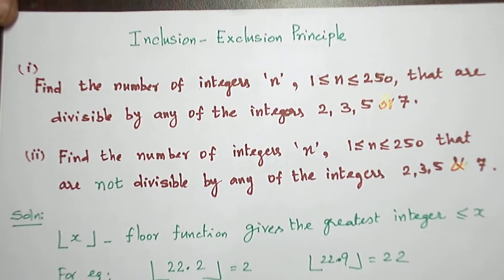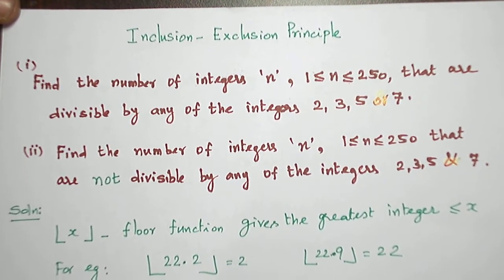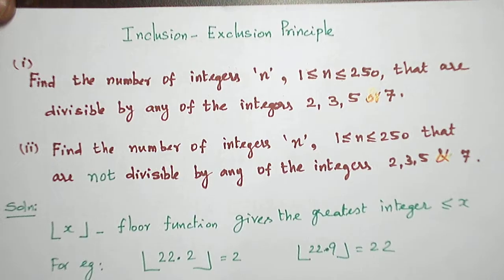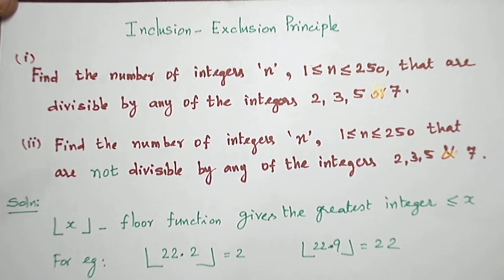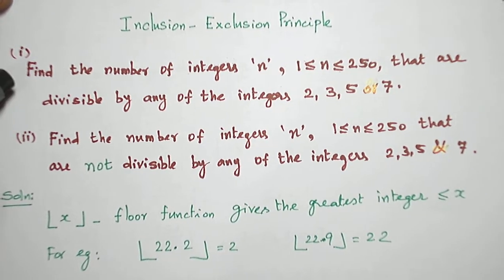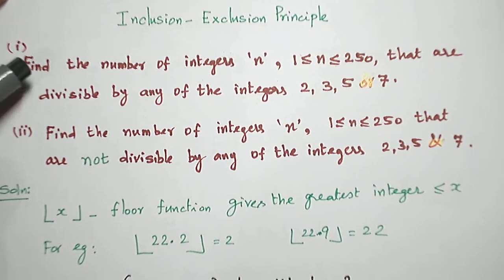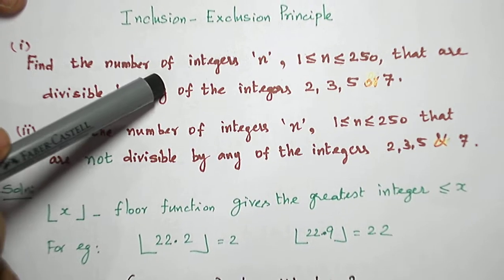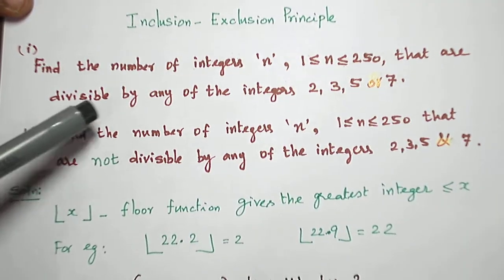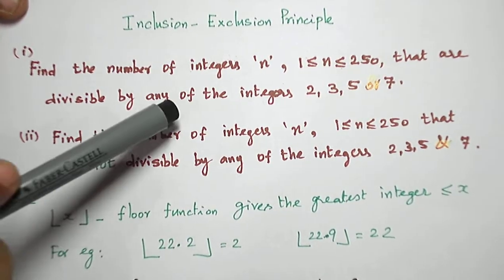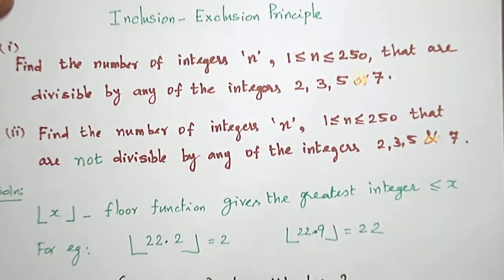Hello students, today let us see a problem from the topic Inclusion-Exclusion Principle that comes under the chapter Combinatorics. The question may be asked in either of the following ways. Find the number of integers from 1 to 250 that are divisible by any of the integers 2, 3, 5, or 7.